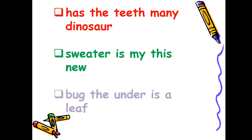Can you see I have written some words here? Let's read them. Number one: 'has the teeth many dinosaur.' So it is a group of words. Does it make any sense? No. Next: 'sweater is my this new.' Does it make any sense? No. Last one: 'bug the under is a leaf.' Does this make any sense? No. All three are not making any sense.